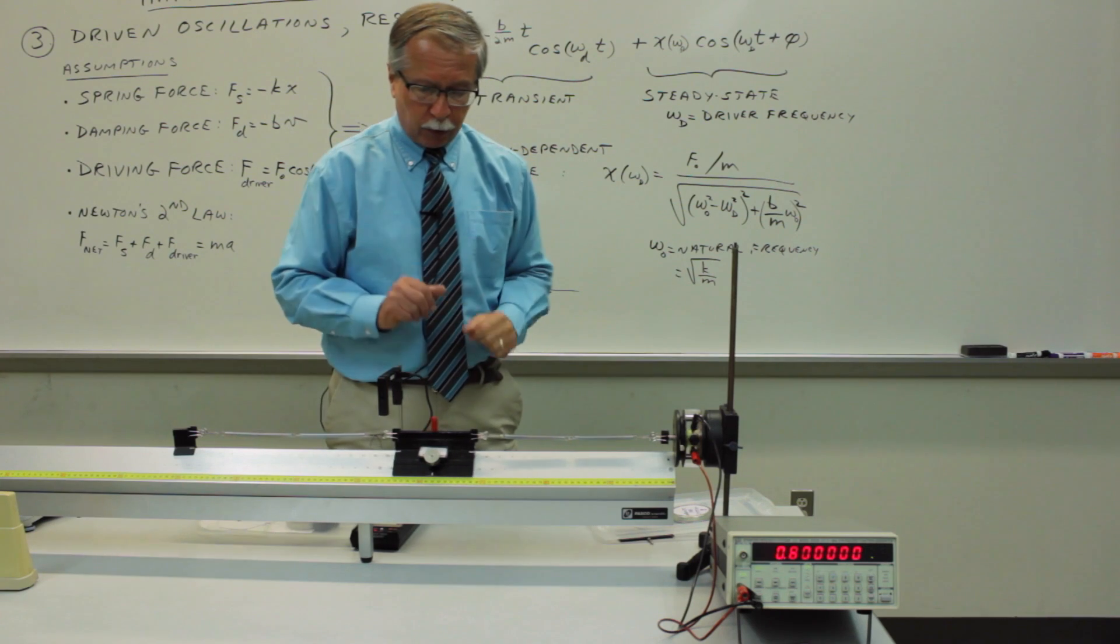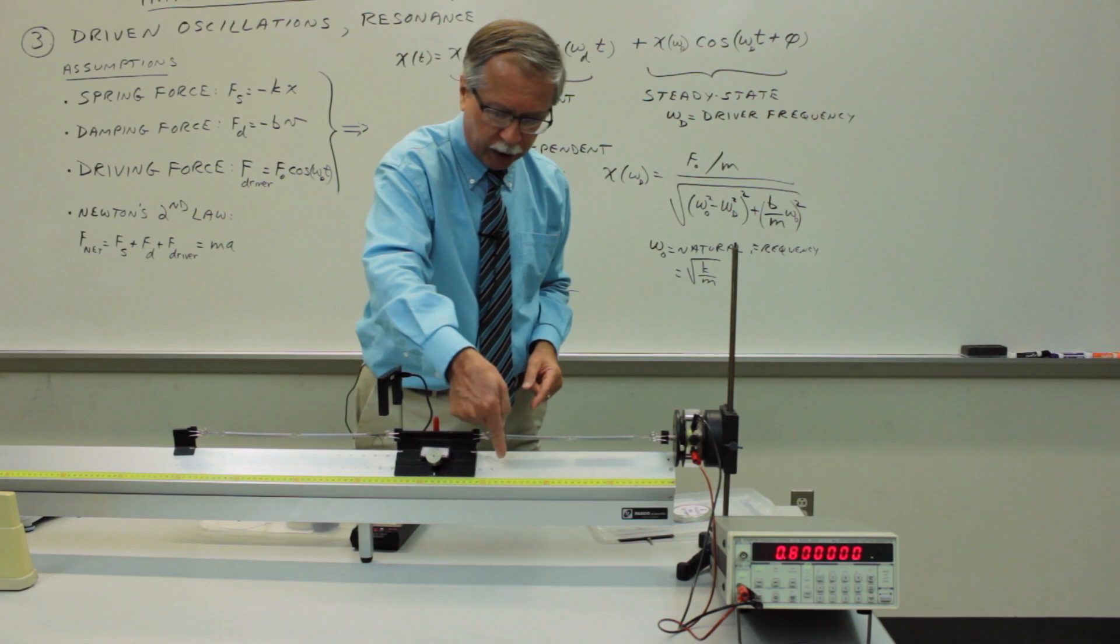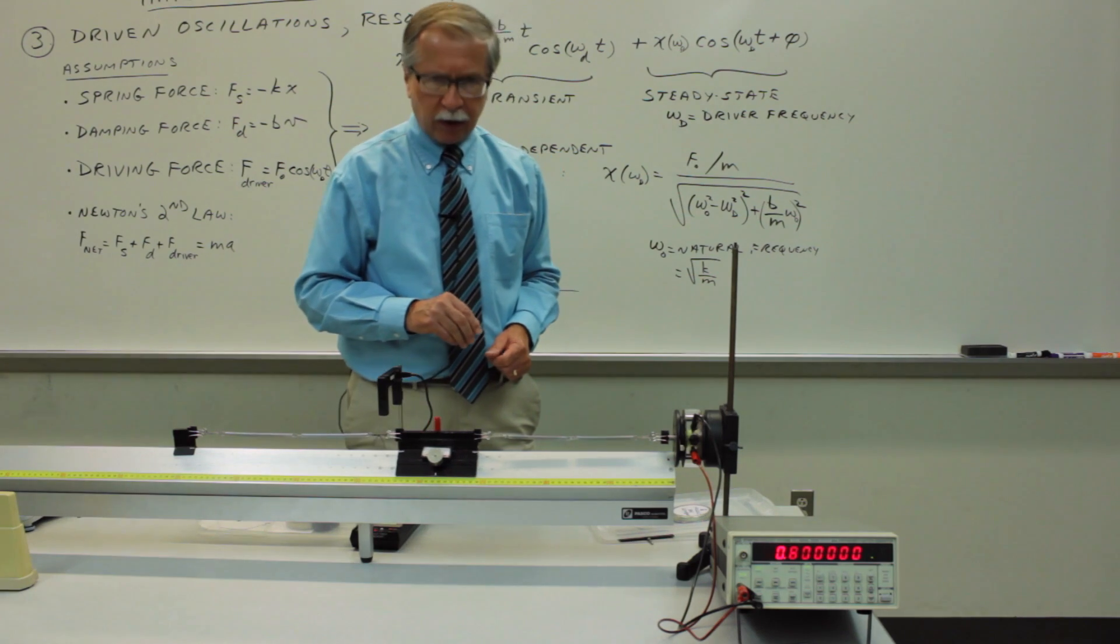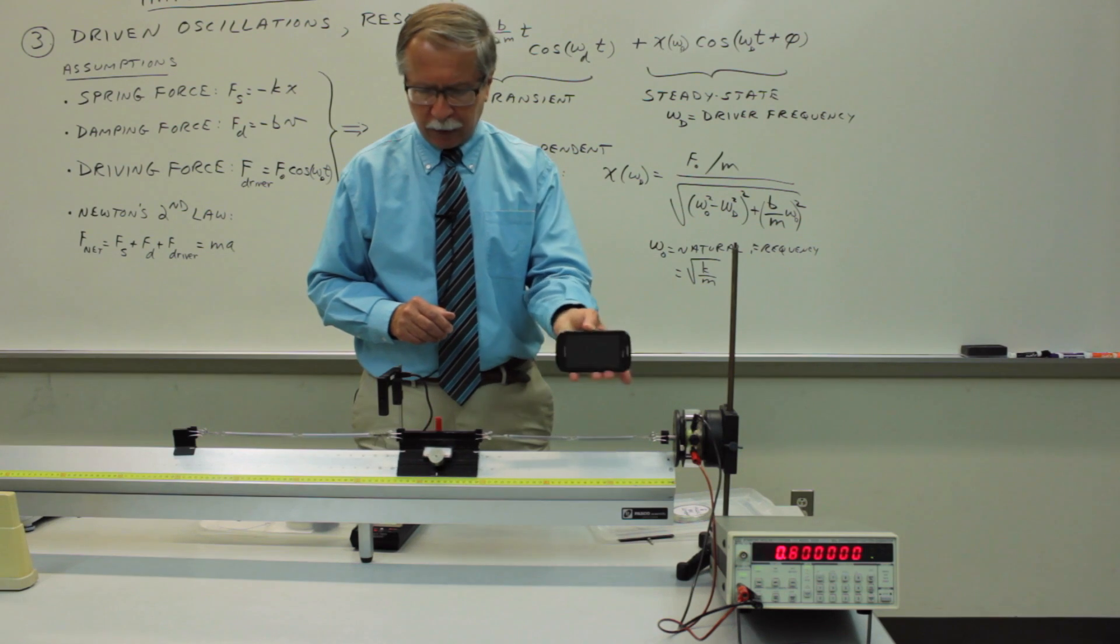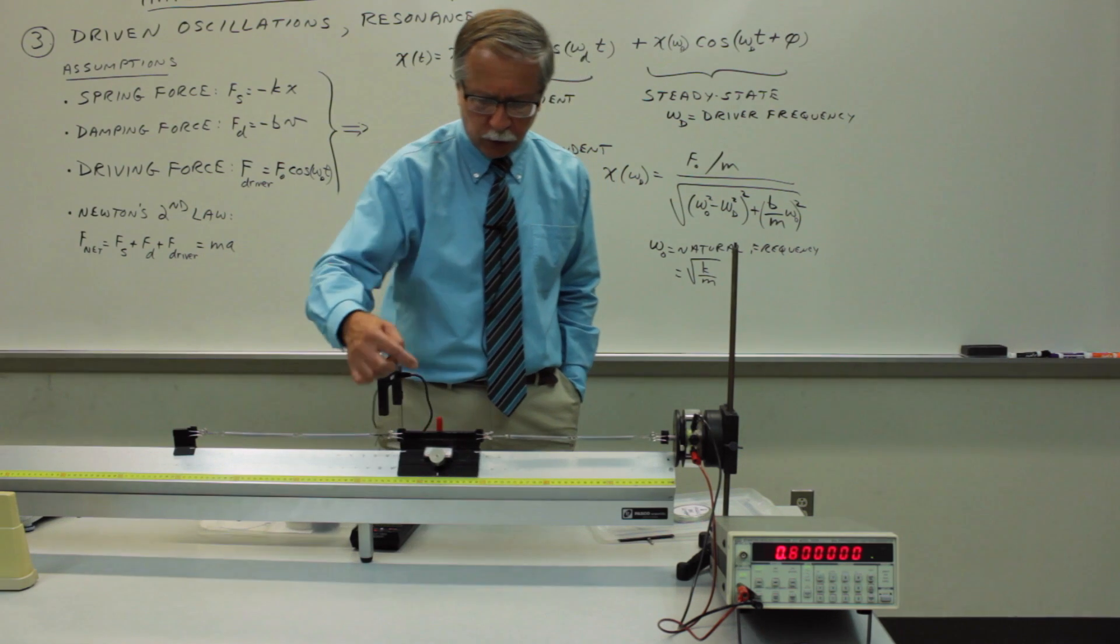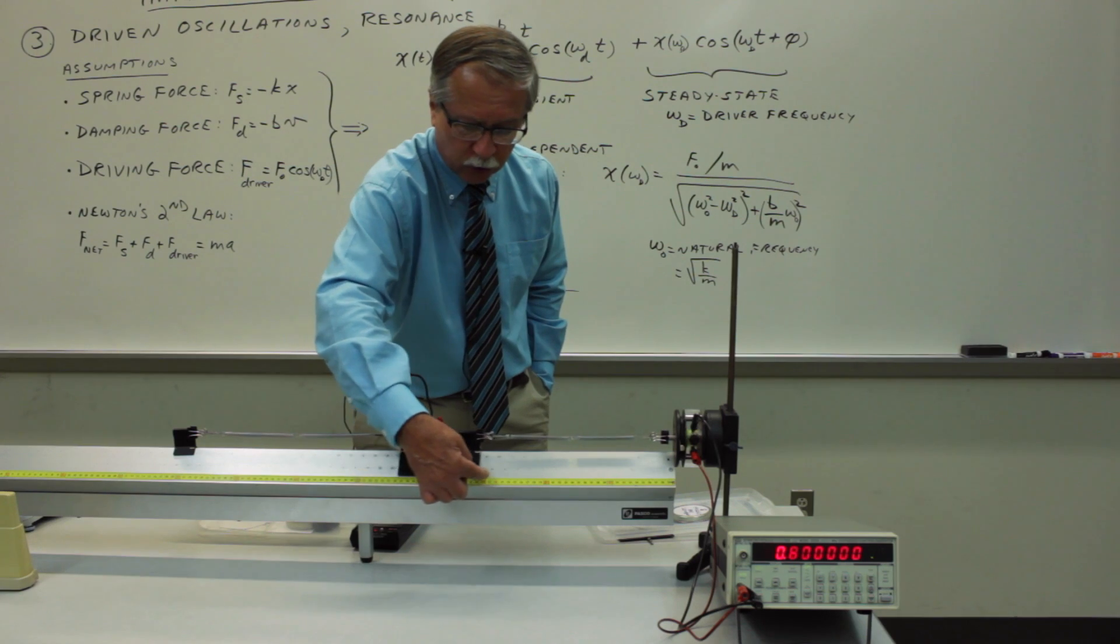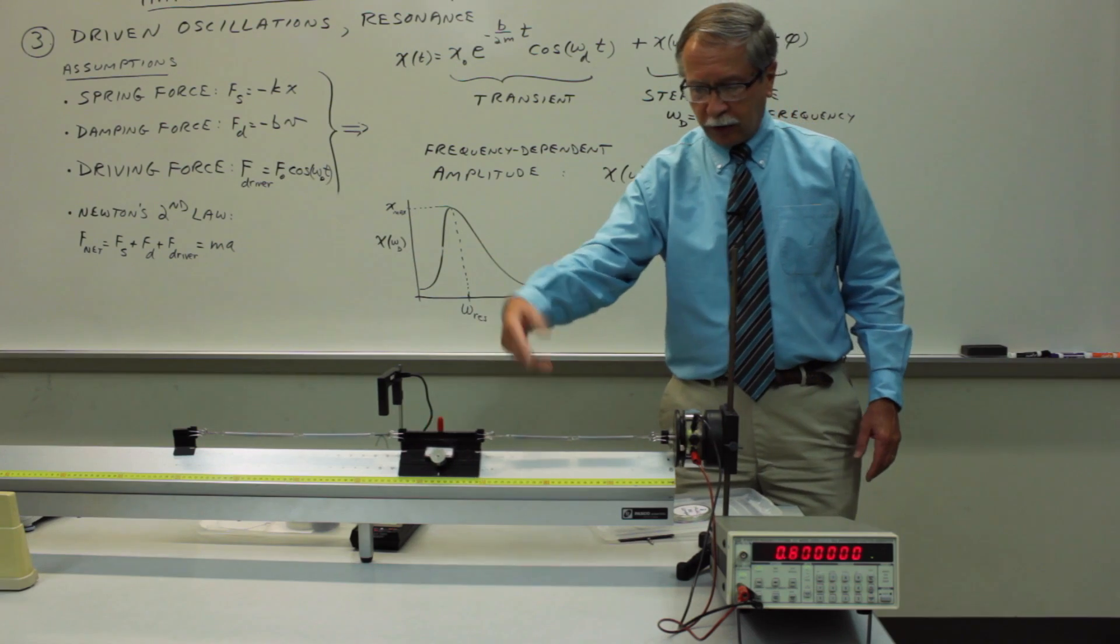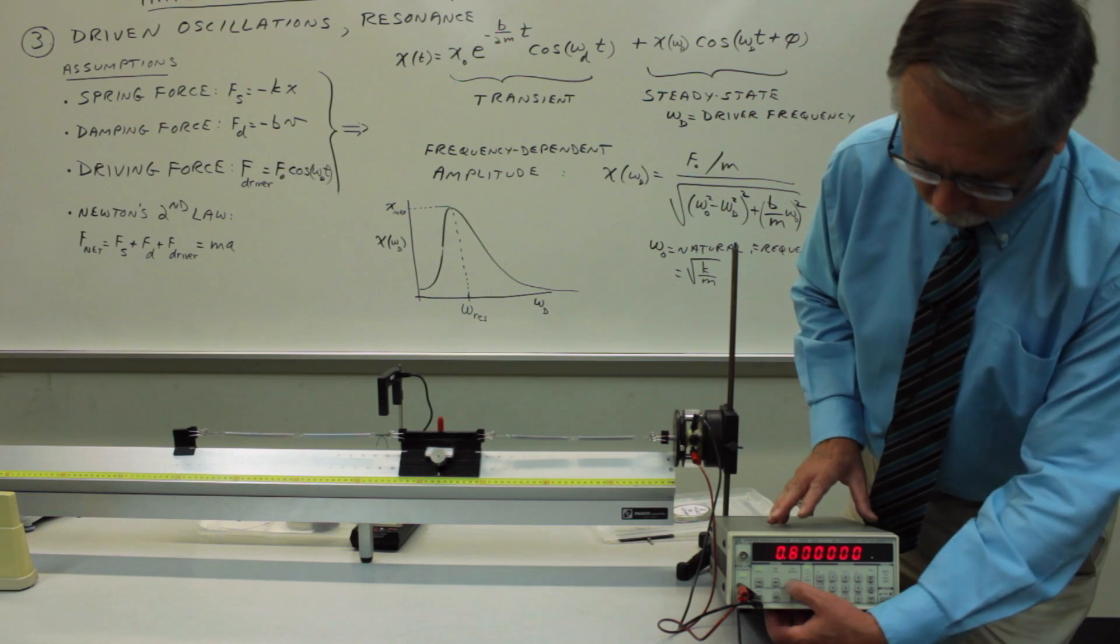So you want to wait a little bit for the transient to die out before you try to make a measurement. And once you are convinced that the transient has died out, then just estimate as well as you can what the amplitude of oscillations is. And you can do that in either way that you choose either by eye or again by using the video capture capability of your smartphone. If you have that, that's entirely your choice. But you want to carefully measure what is the amplitude of oscillation of the system at each of the different frequencies. So we start at an estimate of the resonance, the reciprocal of the period, then change the frequency.